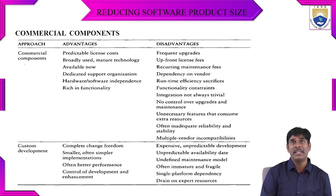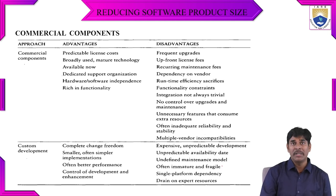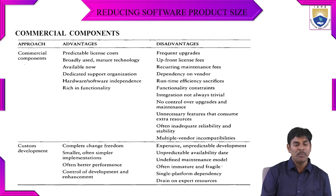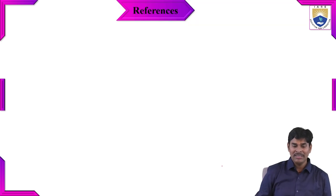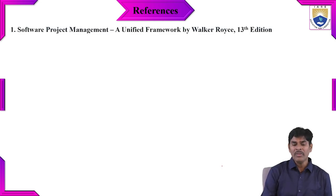With custom development, we cannot define maintenance of different types of models, and it may be fragile and immature, dependent on a single platform with no cross-platform support, and a drain on expert resources. These are the main commercial component considerations — each has advantages as well as disadvantages. These are the main strategies to reduce software product size. This topic is referenced from Software Project Management by Marcker Rose. Please like, share, subscribe, and hit the bell icon for more updates.